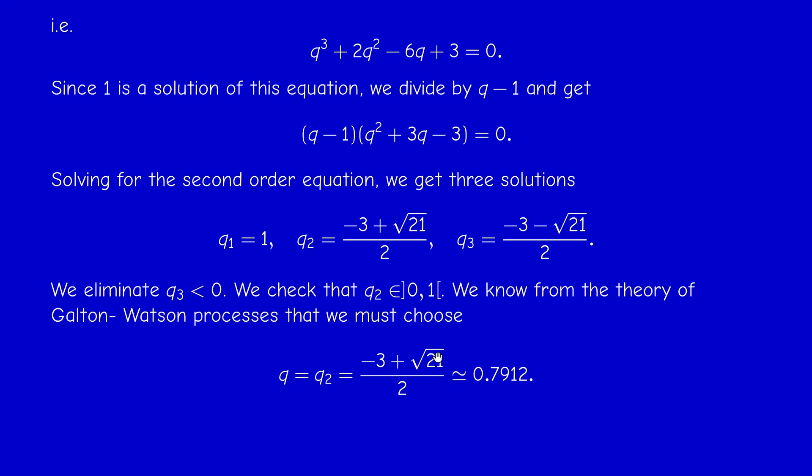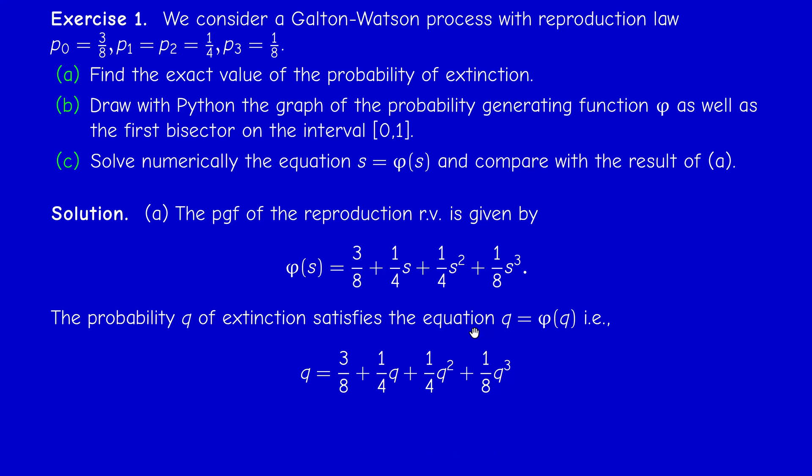When we compute it with the calculator we find 0.7912, so it's a high probability actually. The probability of extinction is about 79 percent, which is very high. Why is it very high? Because the probability of leaving no offspring is 3 over 8, so it's high actually, that's near one half.